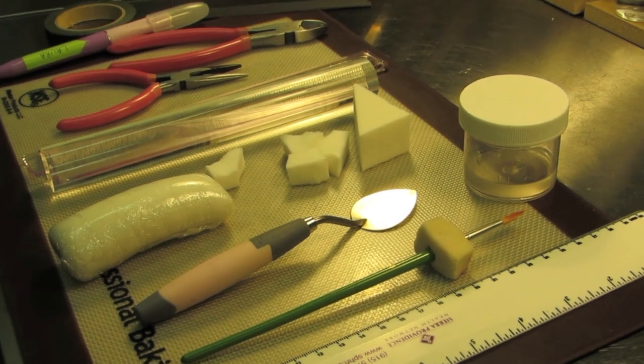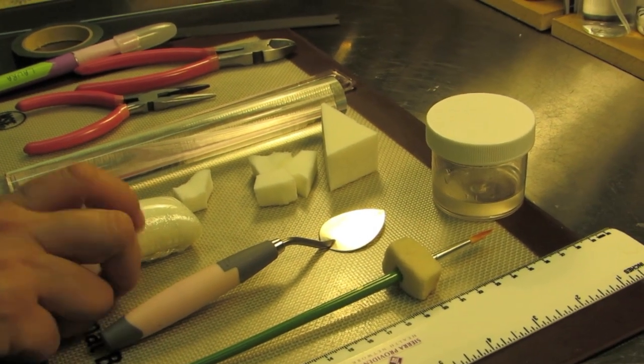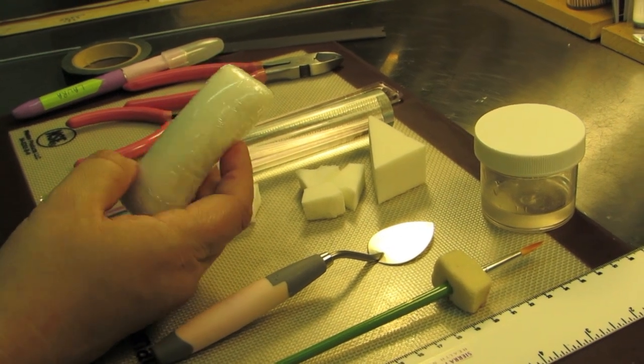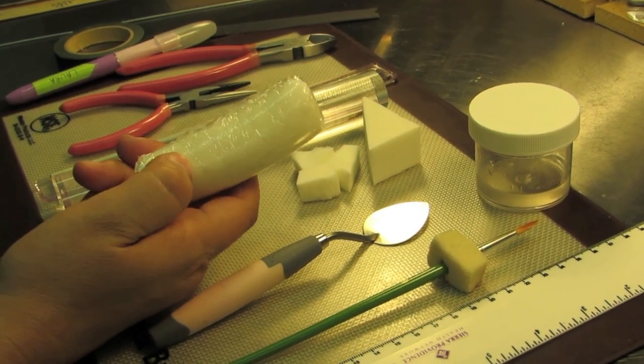These are the materials that you're going to be needing to create your multi-loop bow. You're first of all going to need some gum paste. The bow that I'm making is white, so I'm leaving my gum paste white.